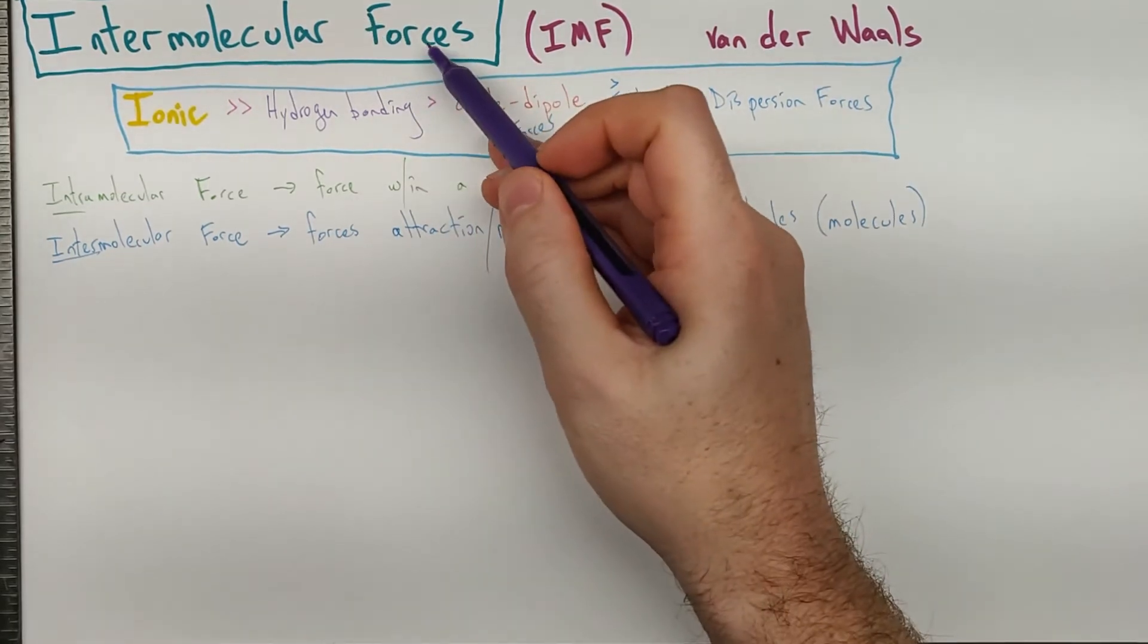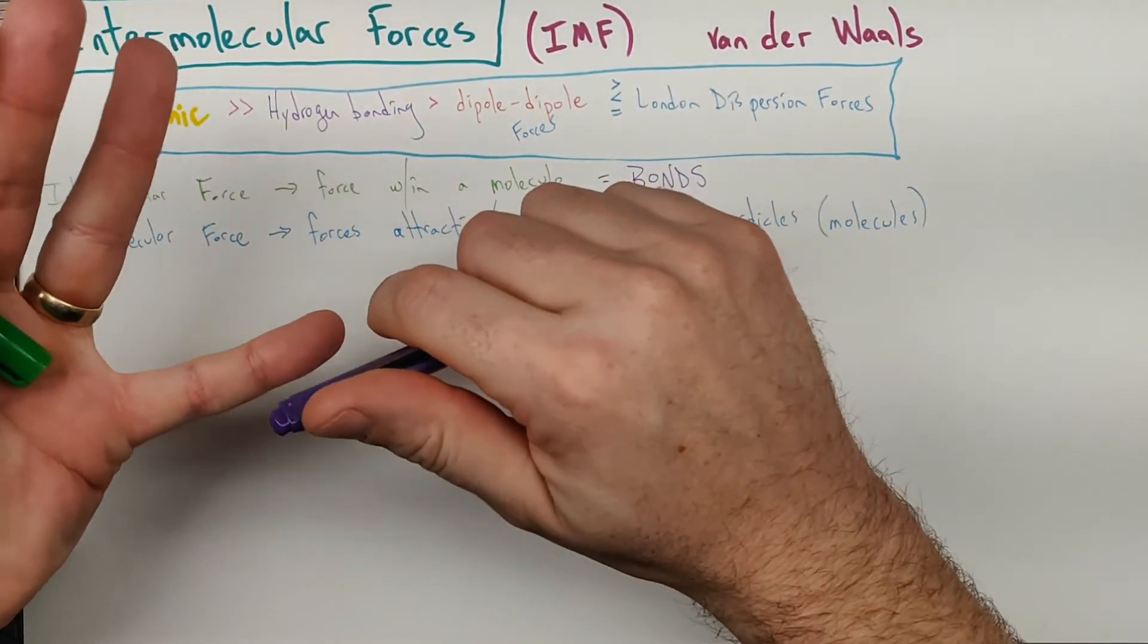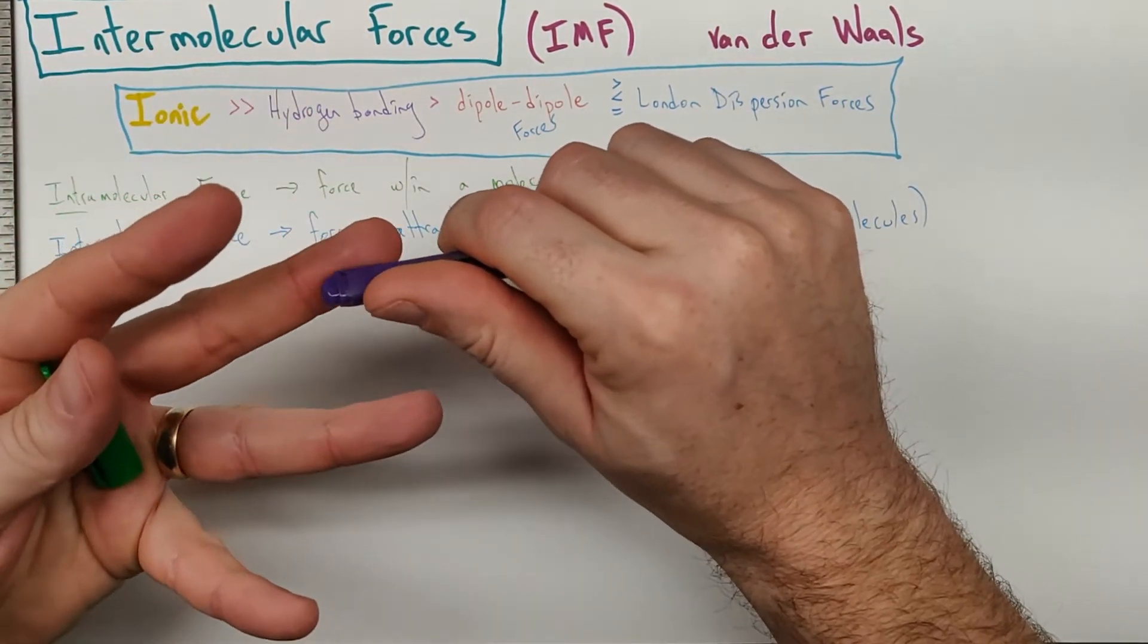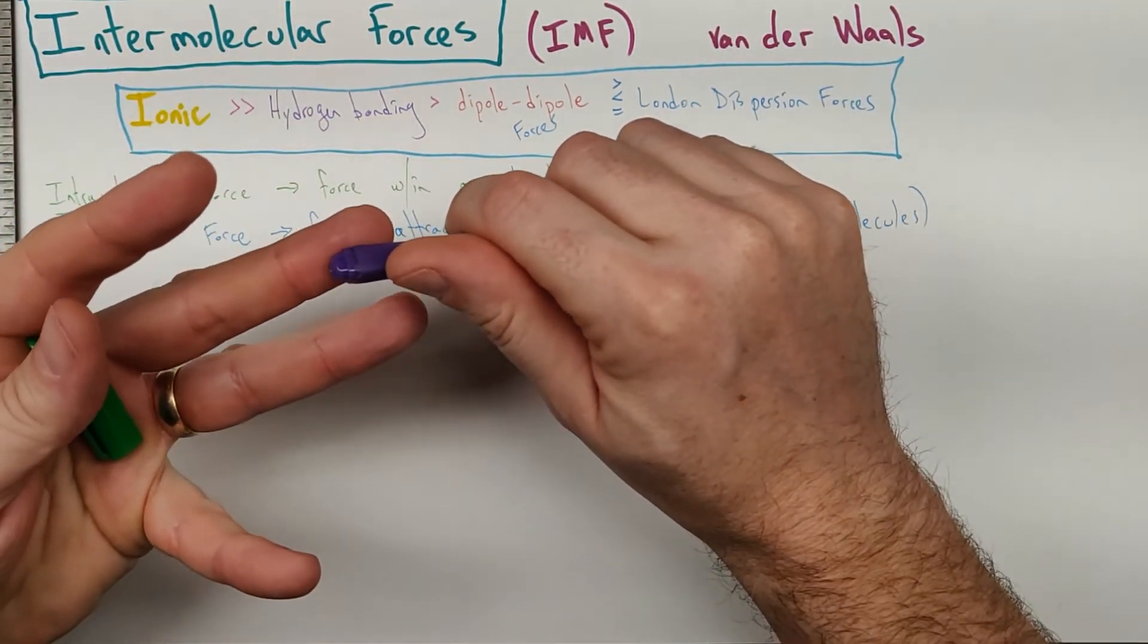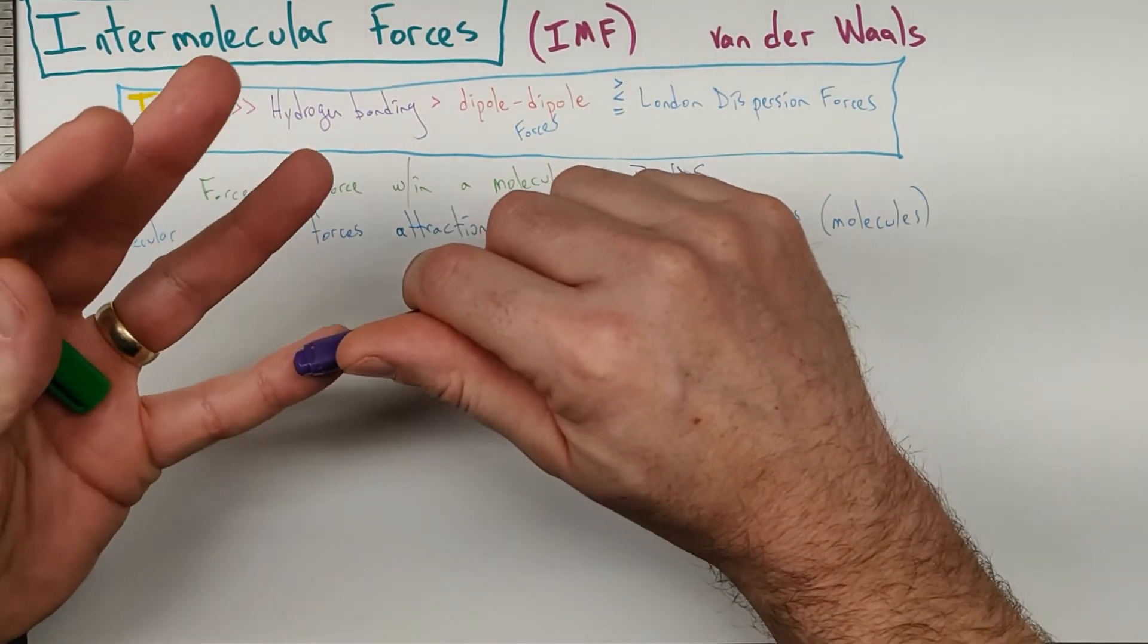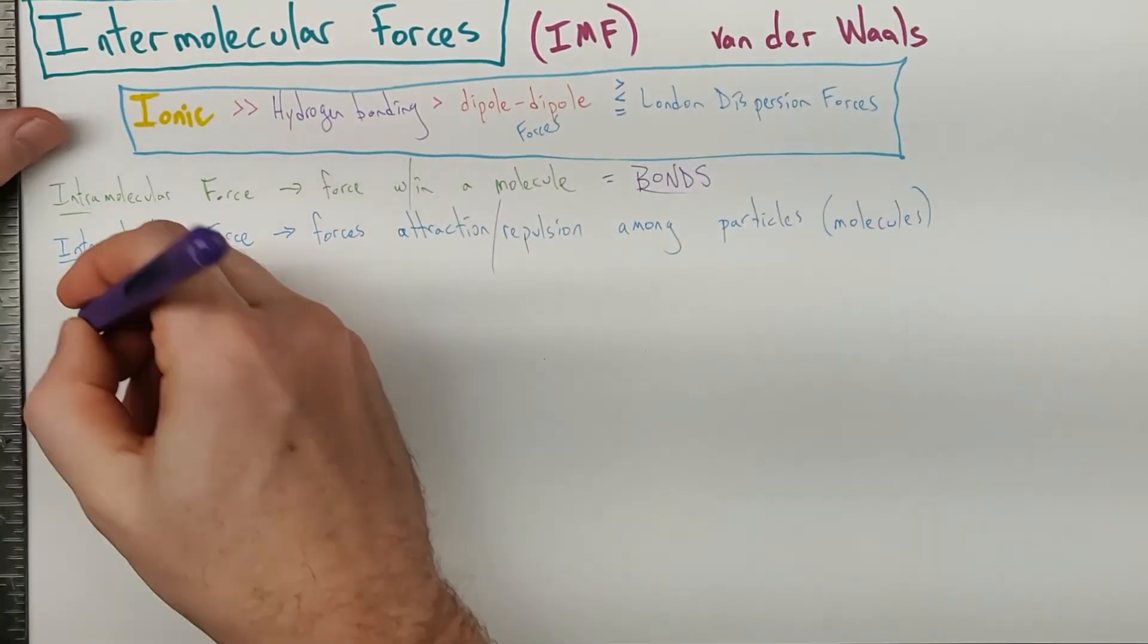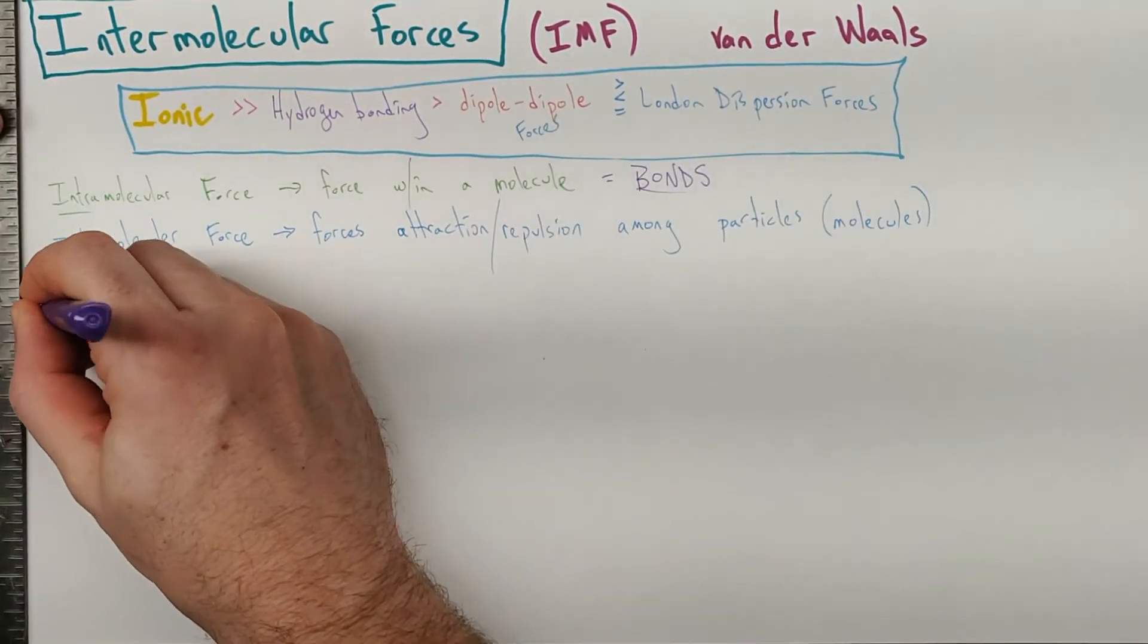Generally, when people talk about intermolecular forces, they're talking about three, which would be dipole-dipole, hydrogen bonding, and London dispersion or just dispersion forces. Since hydrogen bonding is really a subcategory of dipole-dipole, I joke that it's really two and a half types of intermolecular force. But regardless, let's take a look at the specific ones.